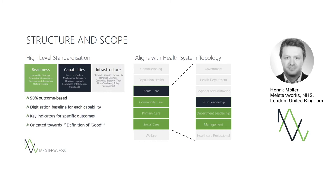Ultimately, what the NHS, with our consulting, came up with was a fairly high level of standardization. We grouped information into three top-level themes. The first was Readiness — broadly, whether an organization is even capable of digitization: is there leadership, do they have a strategy, are there resources, can they do the governance needed for efficient digitization, and are there information skills and training among the workforce? The second theme was Capabilities, which was really about clinical and other processes: records, orders, medication, transferring care to other departments or facilities, as well as decision support, telehealth, and business intelligence standards. We later added other features as well, but this was the core set we started with.